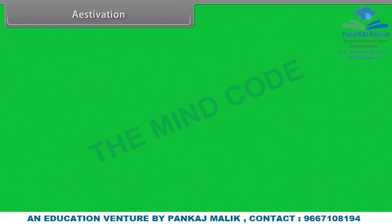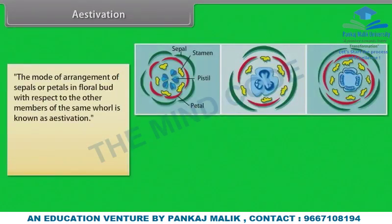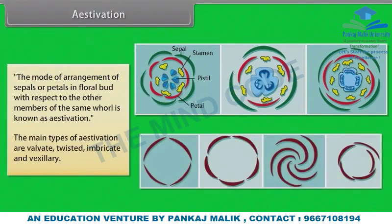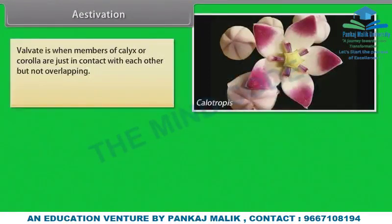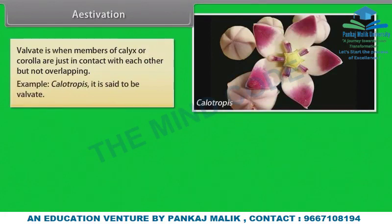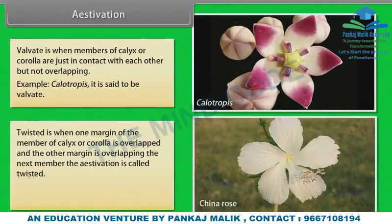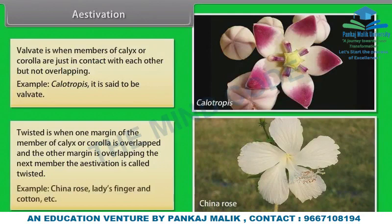The mode of arrangement of sepals or petals in a floral bud with respect to the other members of the same whorl is known as estivation. The main types of estivation are valvate, twisted, imbricate and vexillary. Valvate is when members of calyx or corolla are just in contact with each other but not overlapping, example Calotropis. Twisted is when one margin of a member overlaps the next and the other margin is overlapped, example China rose, Lady's finger and Cotton.